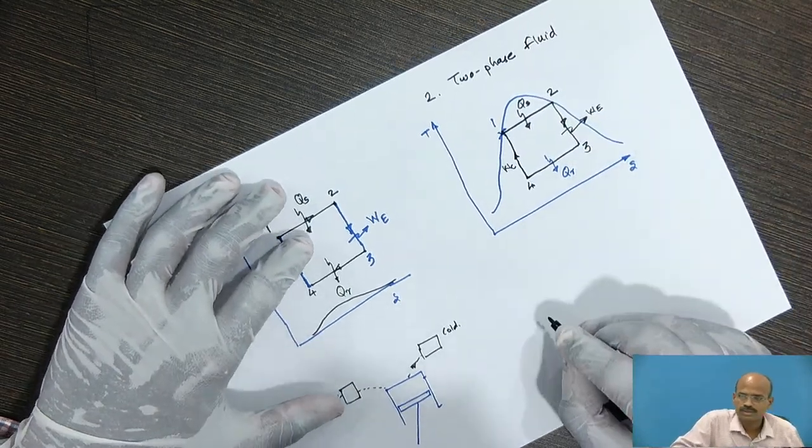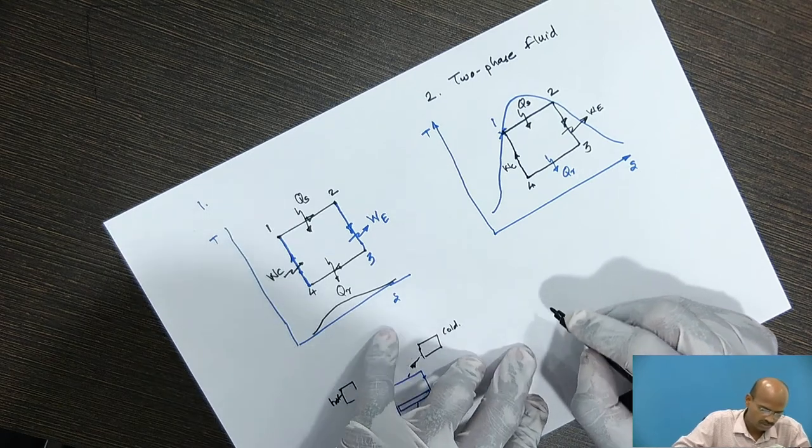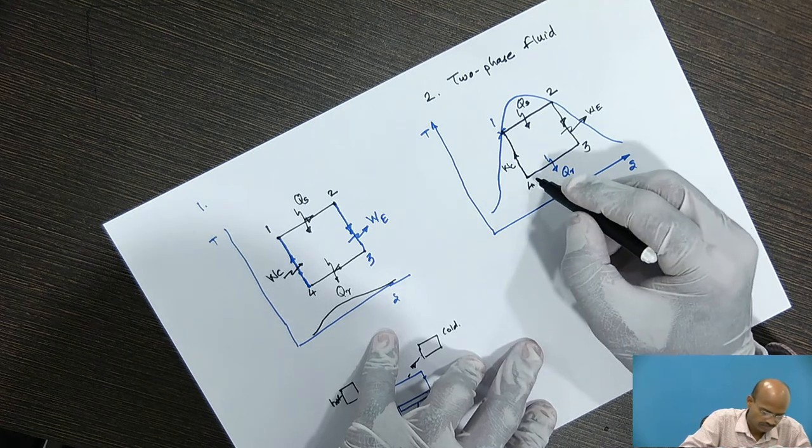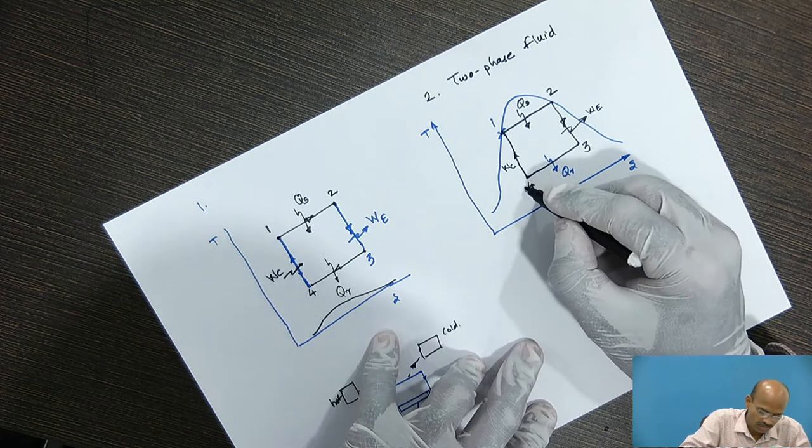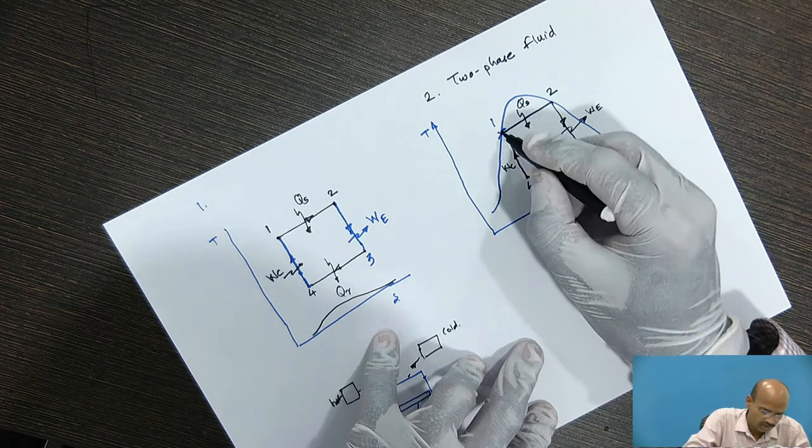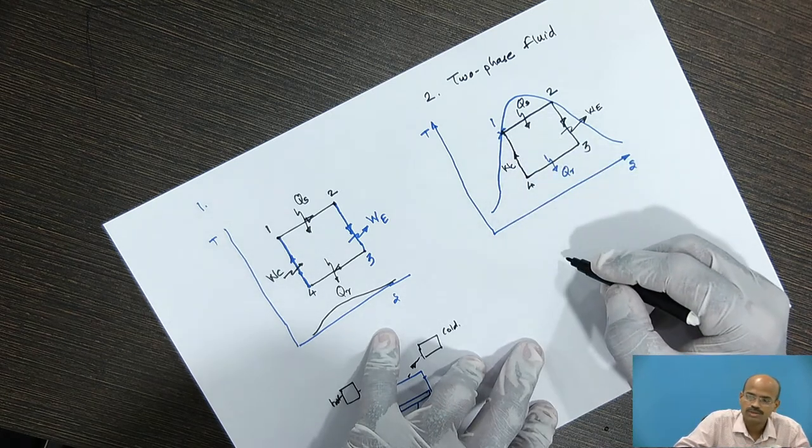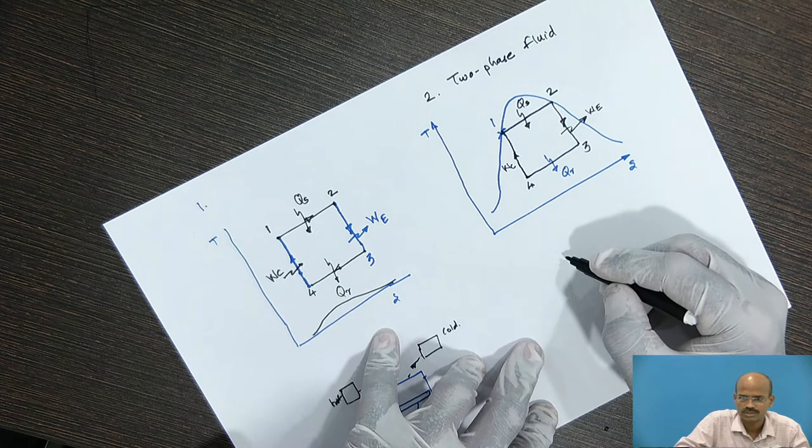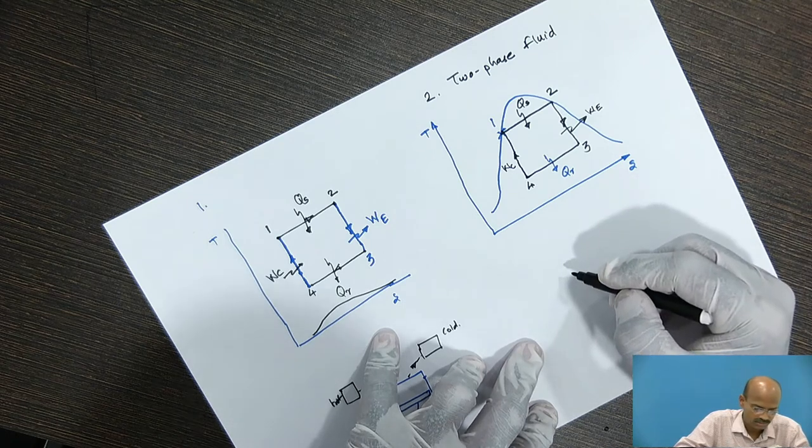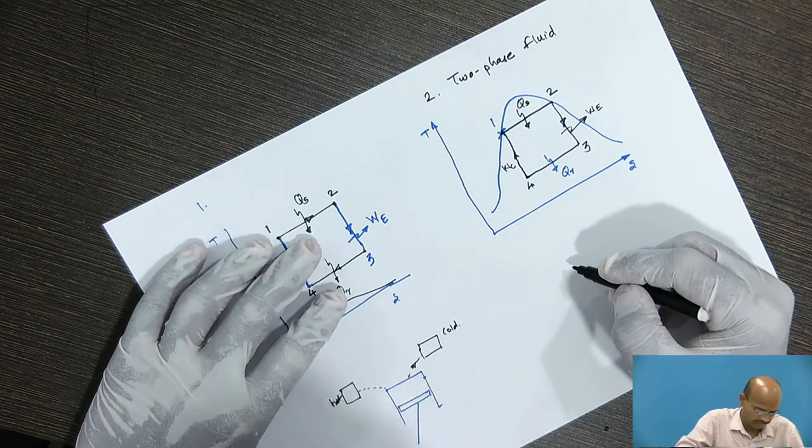Now, this is quite difficult because there is no pump available practically which will be converting the wet steam into saturated liquid during compression process. That is why the practicable cycle is Rankine cycle, that is to be kept in mind.